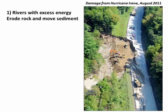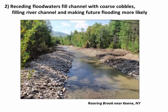The energy budgets of rivers came into play in two different ways. First, on the front end of the flooding, rivers that had excess energy eroded rock and moved a lot of sediment, creating obvious problems as that erosion destroyed roads, homes, and other infrastructure. But on the backside of the flooding, as the floodwaters receded, those raging torrents carrying huge clasts and boulders subsided and were no longer able to carry those coarse cobbles and clasts.